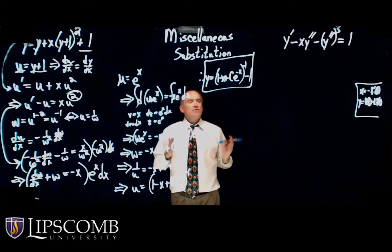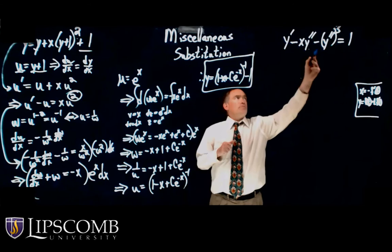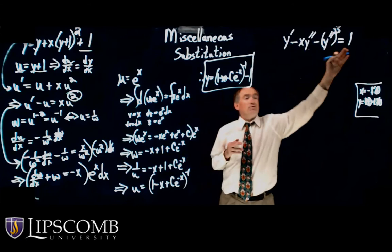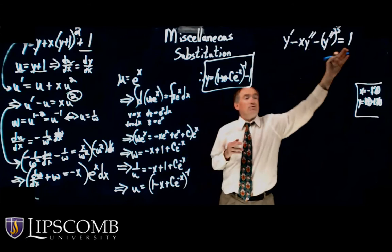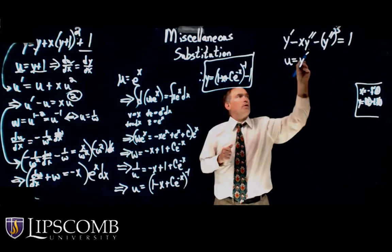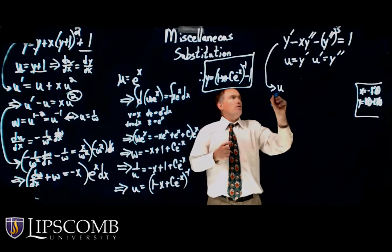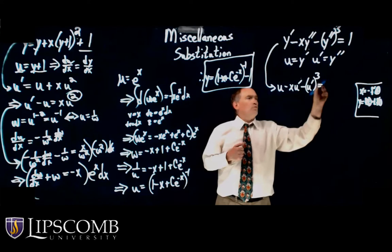That's the first solution using miscellaneous substitution combined with several methods. Now let's do another example: y prime minus x times y double prime minus y double prime cubed equals 1. I look at this and see derivatives everywhere — except for this one term, there's not a single term without a derivative. So why don't we let u equal y prime, so u prime equals y double prime? Making this substitution gives u minus x times u prime minus u prime cubed equals 1.